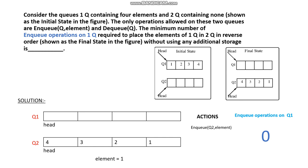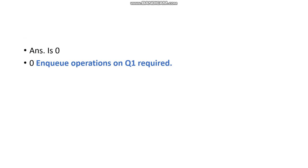Finally, we got the desired Q1 and Q2 state — all elements are in reverse order. Surprisingly, we don't need any ENQ on Q1, so the answer is zero.